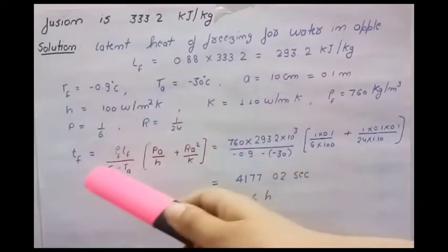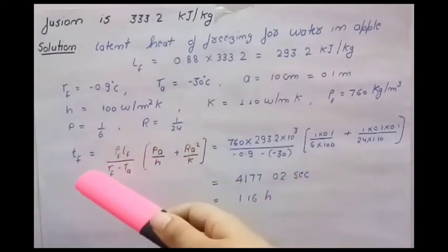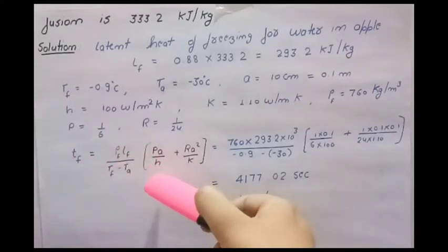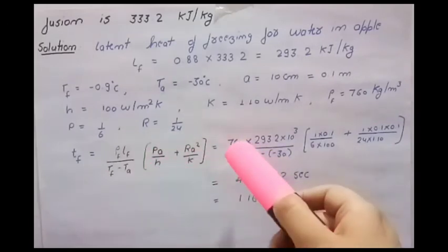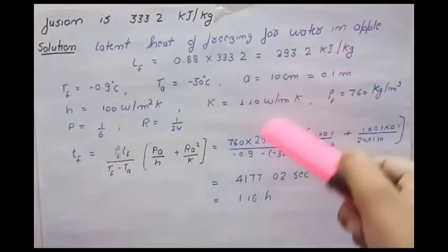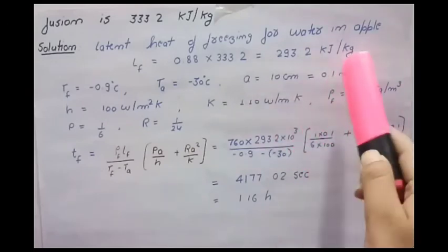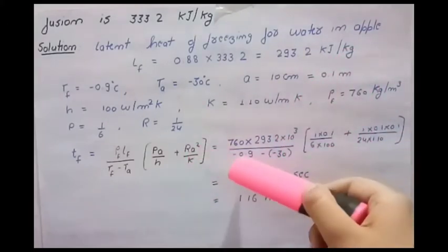This is the formula to calculate the freezing time according to Planck's equation: Tf equals rho F into Lf divided by Tf minus Ta, then Pa upon h plus Ra square upon K. Now let us put the value: rho F is 760, Lf we calculated 293.2 in kilojoule so we convert into joule by multiplying by 1000, Tf is minus 0.9 and Ta is minus 30.